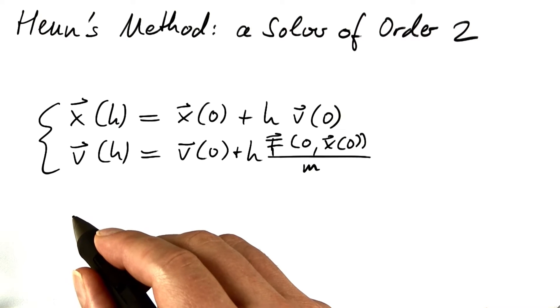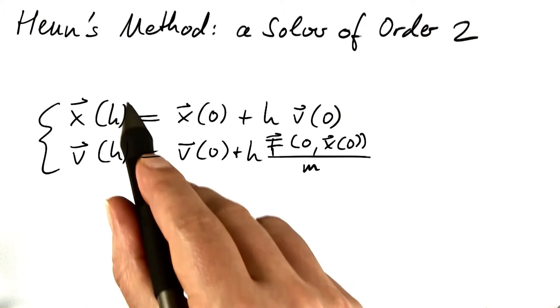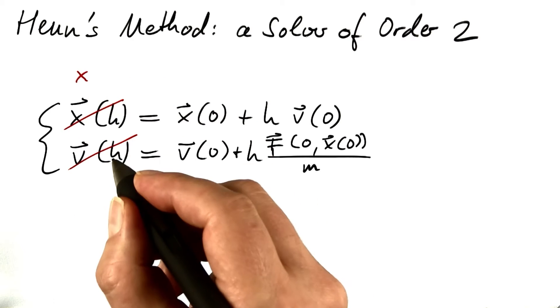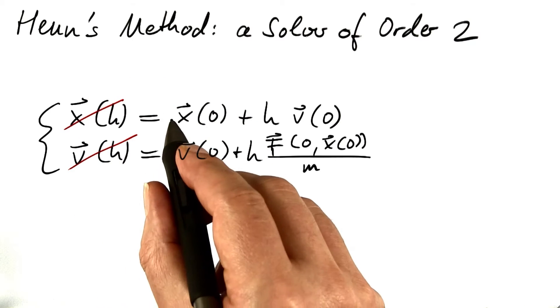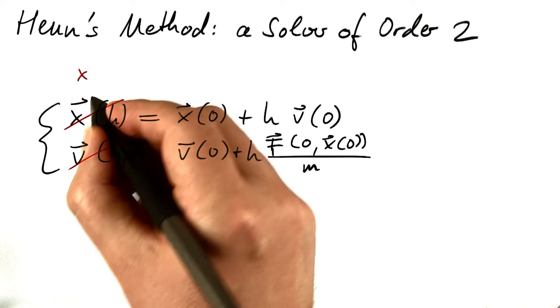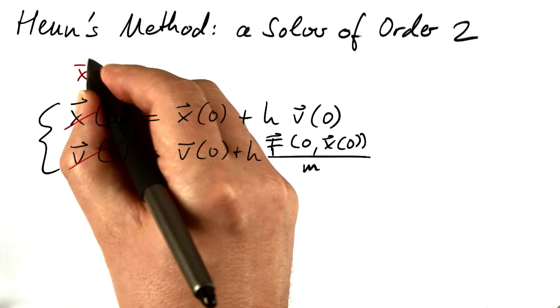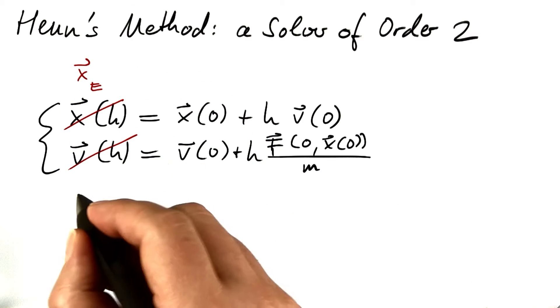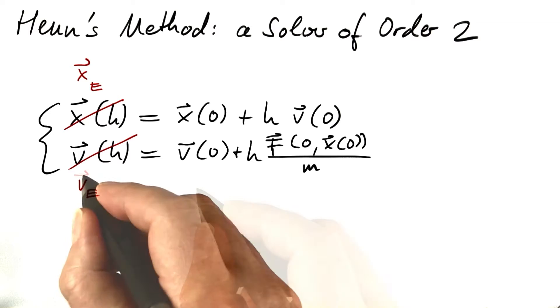And what we do now, we do not actually use these results for the next step, we use them as stepping stones, if you will. Let's store this result as x subscript e for Euler and this result as v subscript e for Euler.